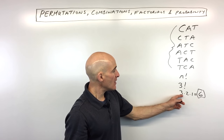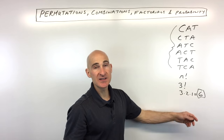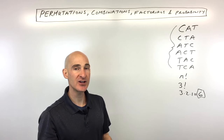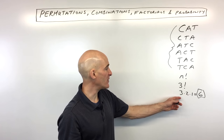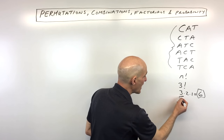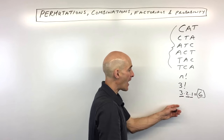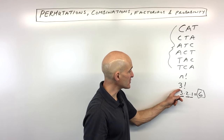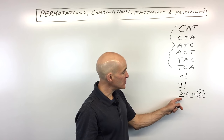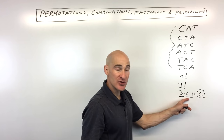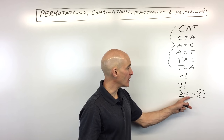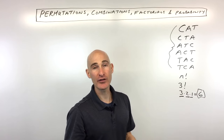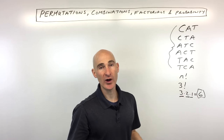Another way to look at this is the fundamental counting principle, or the multiplication counting principle. Basically, for each category — each letter — how many choices are there? There are three choices for the first letter, but once you use that letter, there are only two choices for the second letter. And once you use those two, there's only one left for the third. So it's three times two times one.